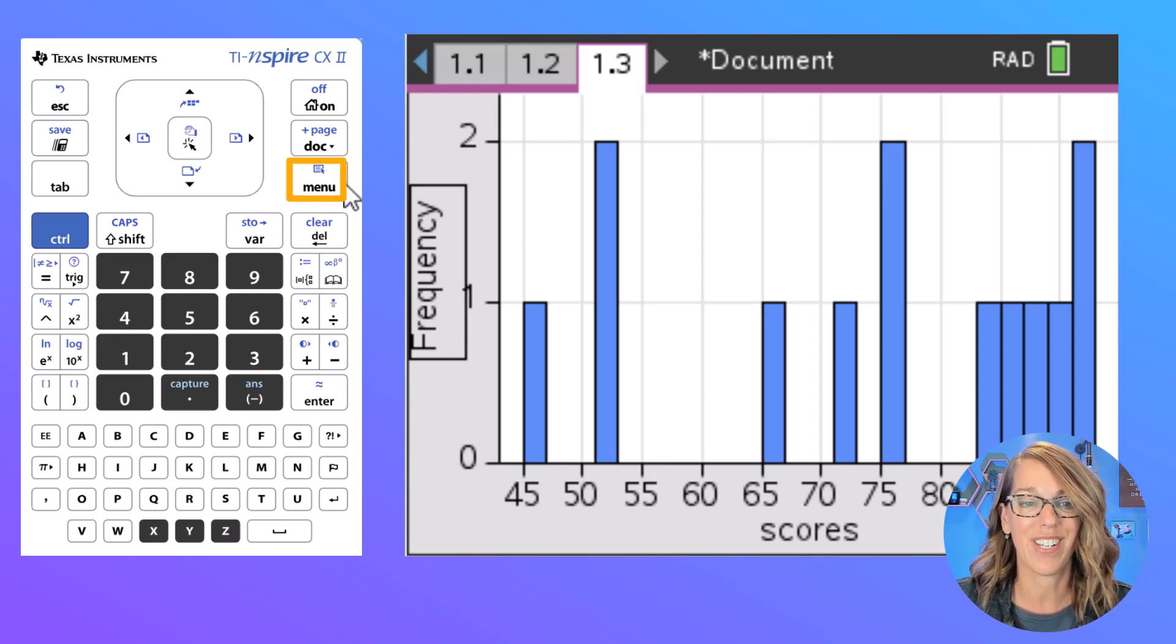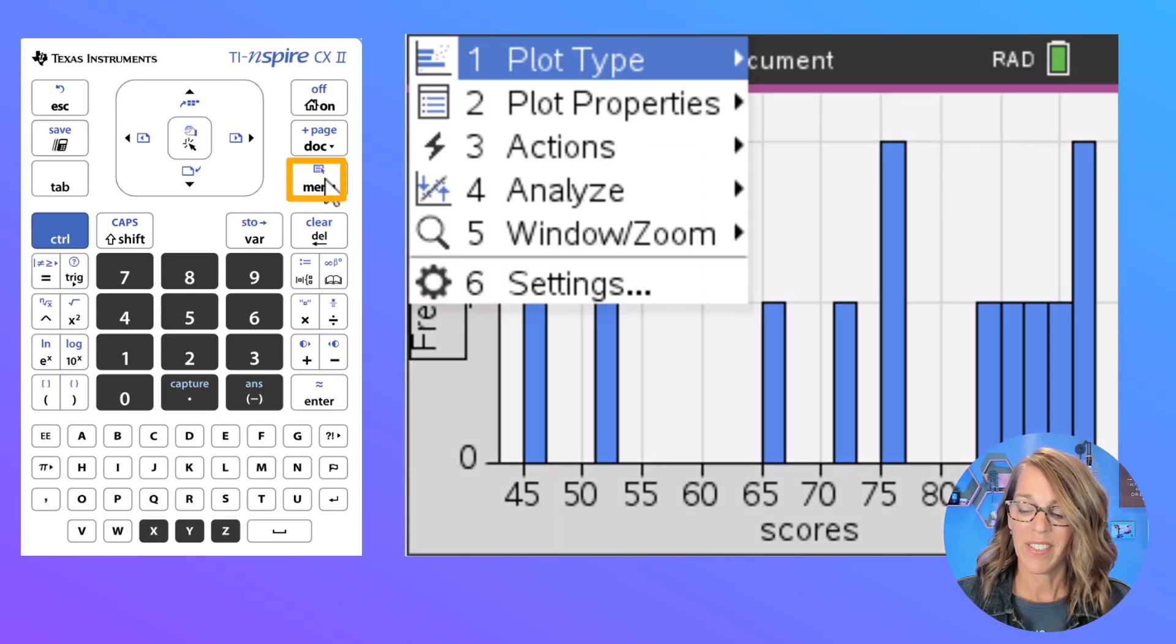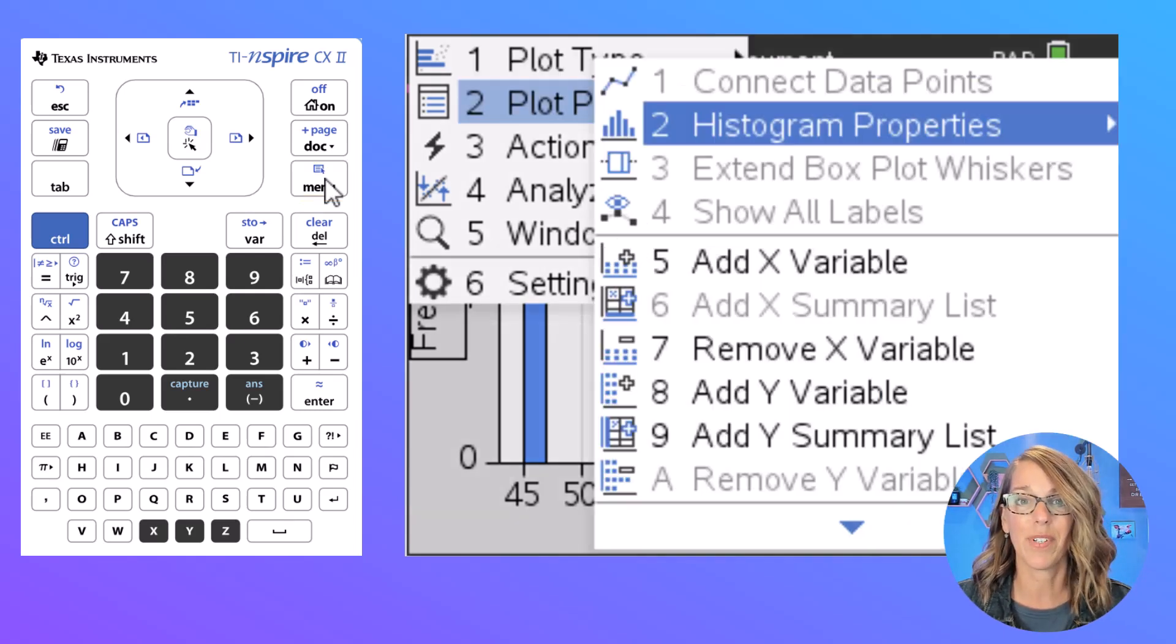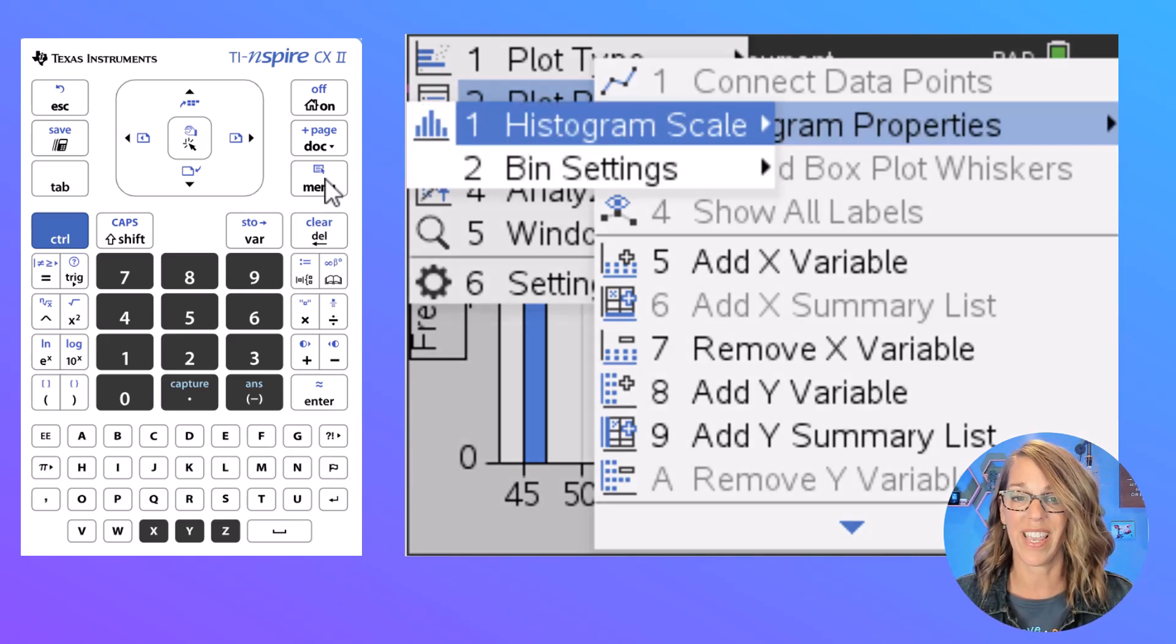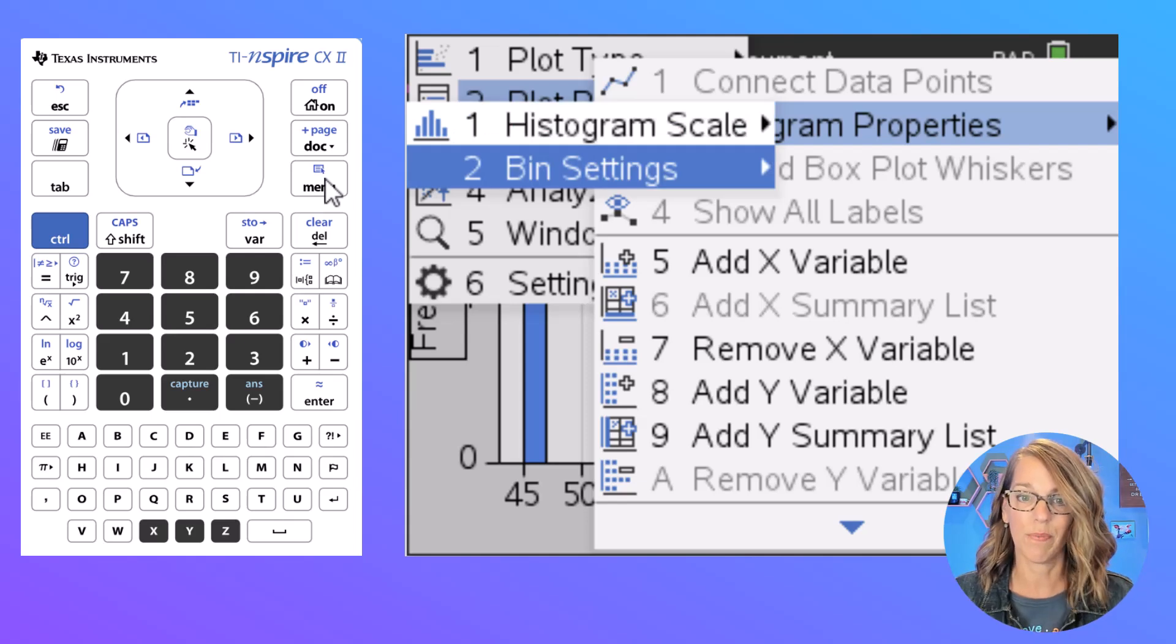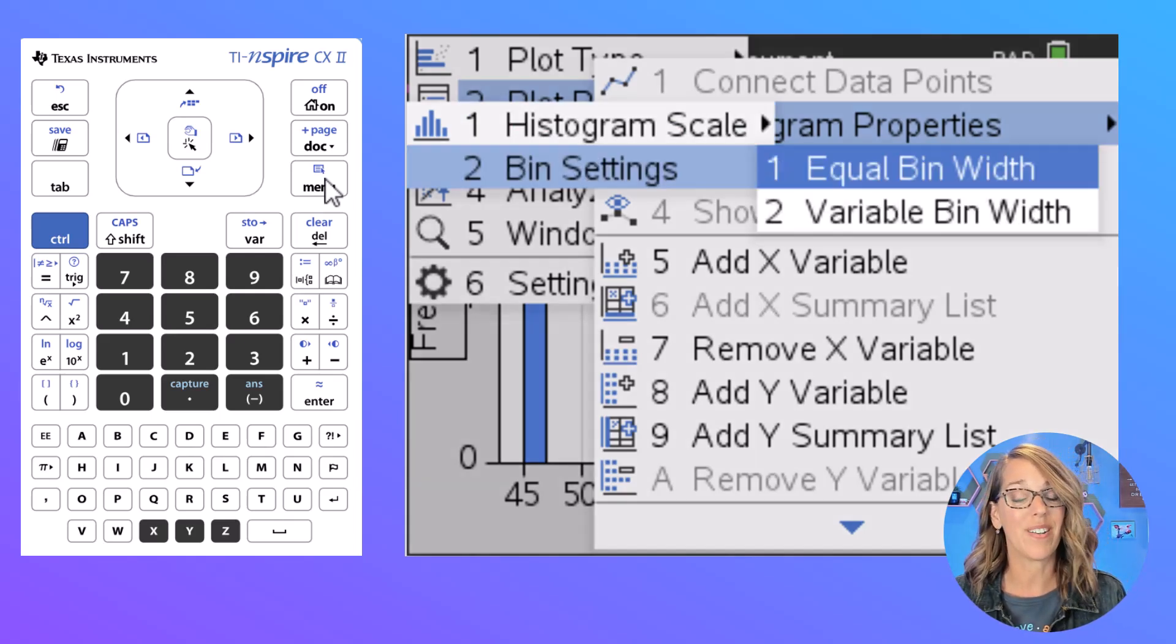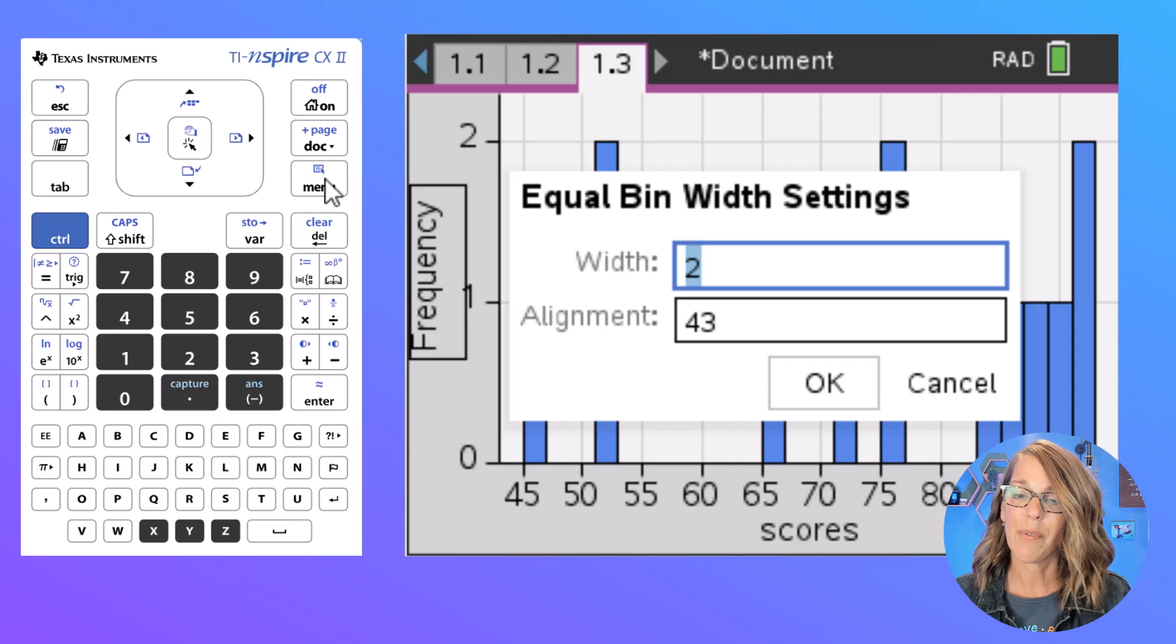Again, I go to my menu to do this. So I click on menu. This time I want number 2, which is plot properties. So I hit number 2, and we want histogram properties, which is 2 again. I want to change the bin settings, which is number 2. Again, I do want equal bin widths. I want 10 for each of those bars. So I hit 1 for equal bin widths, and I want those widths to be in 10s.